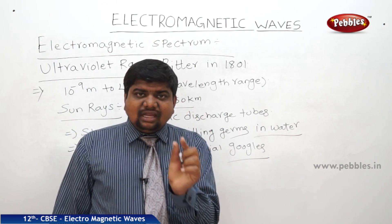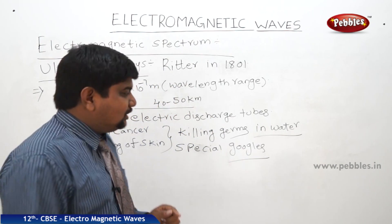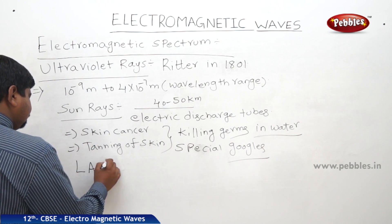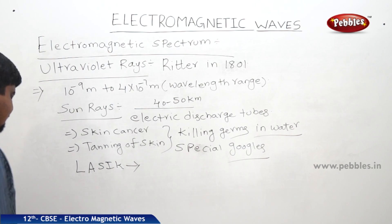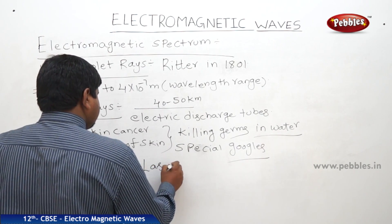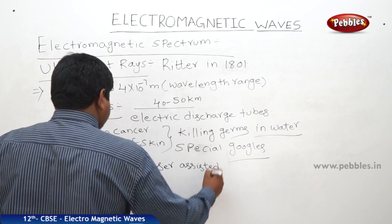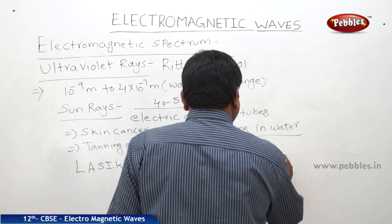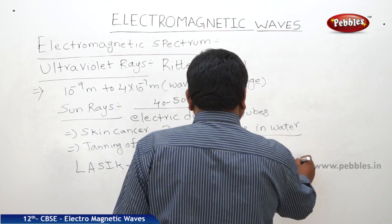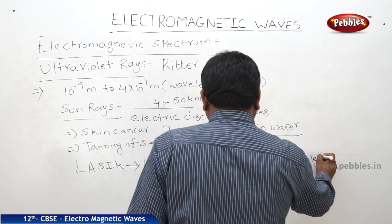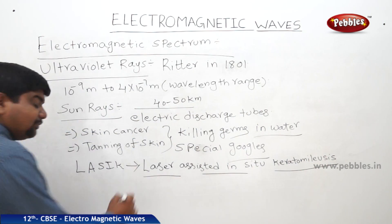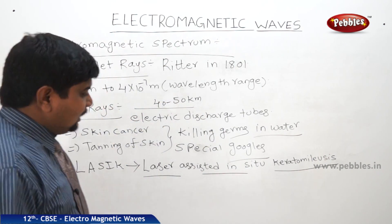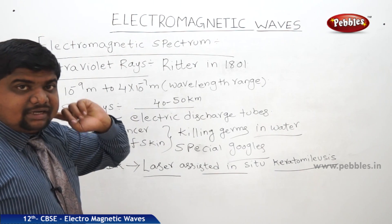UV rays have a short wavelength and can produce a narrow beam. Because of this narrow beam structure, ultraviolet rays are useful in an operation called LASIK — Laser Assisted In-Situ Keratomileusis — which is performed on the eyes and is useful to treat the retina.